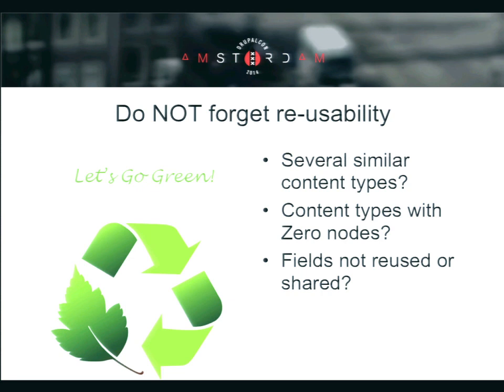Are there any content types with zero or one piece of content? Possibly you thought your front page should have some unique fields, so you define a content type called 'front page content,' and in the entire lifetime of the website you just added one node for it. Is that the right way? When you define anything as a content type, the entire node system comes into play — all the hooks related to node come into play — and every time there is an edit or update, all that system runs. So always analyze: is this really a content type, or not?